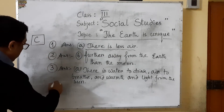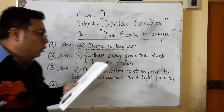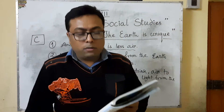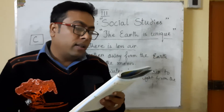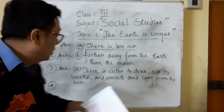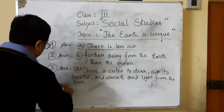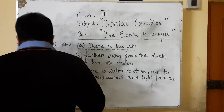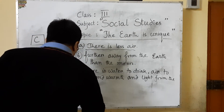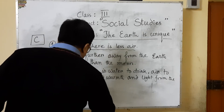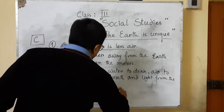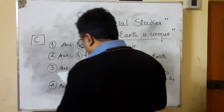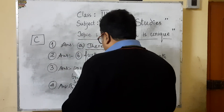Number four: we must look up to the earth because it is very beautiful, or it is home to people, plants and animals? The answer is B — it is home to people, plants and animals.